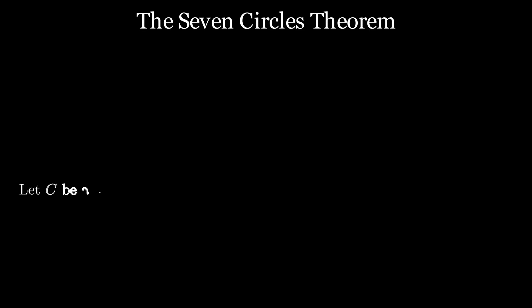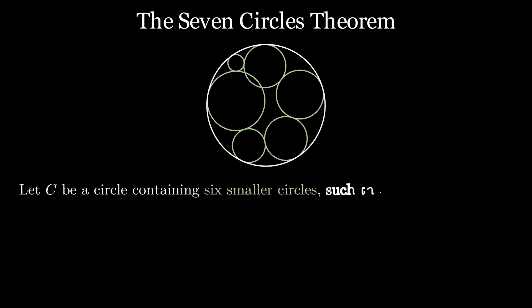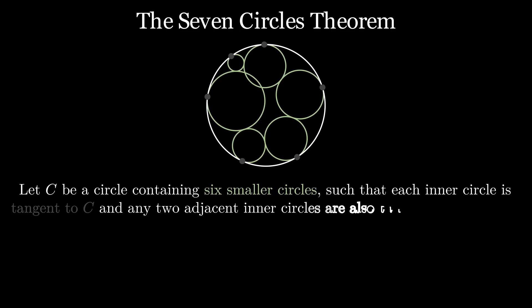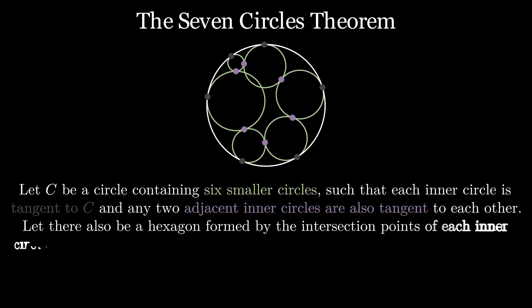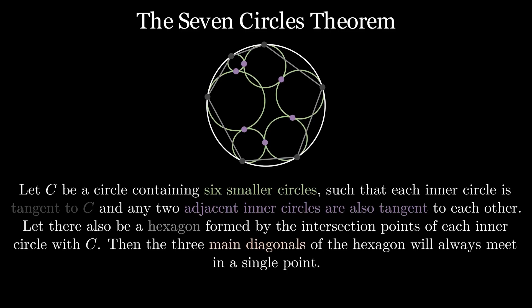Let us now finally take a look at the seven circles theorem. Let C be a circle containing six smaller circles, such that each inner circle is tangent to the outer circle, and any two adjacent inner circles are also tangent to each other. Let us also draw the hexagon formed by the intersection points of each inner circle with the outer circle. The seven circles theorem then states that the three main diagonals of the hexagon will always meet at a single point.